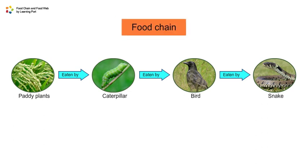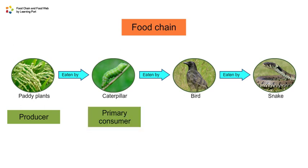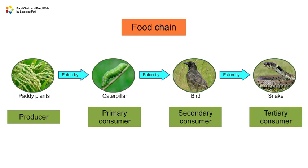A food chain usually starts with a producer, followed by a primary consumer, a secondary consumer, and lastly, a tertiary consumer.